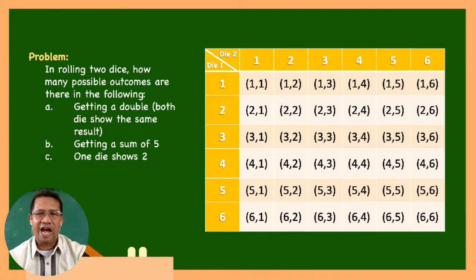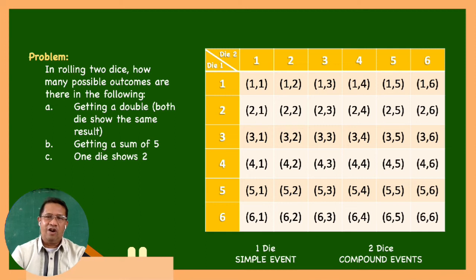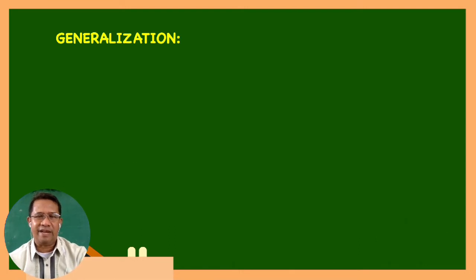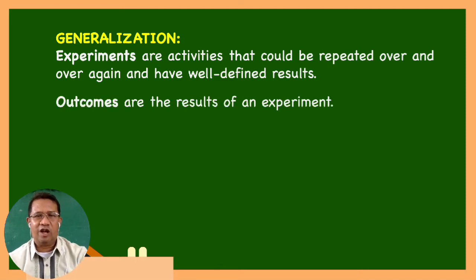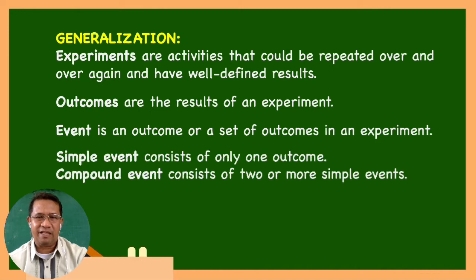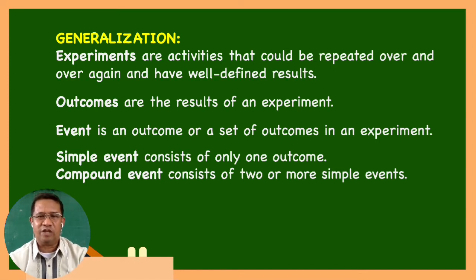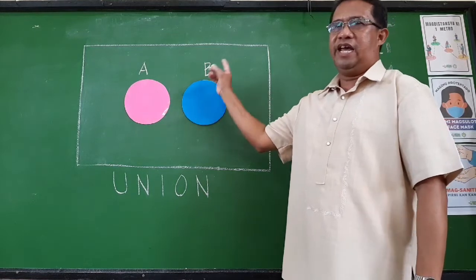In the experiment, the outcomes are listed in the table. Rolling one die is a simple event. Rolling another die is another simple event. Hence, rolling two dice is an example of a compound event. As a summary: experiments are activities that can be repeated over and over again and have well-defined results. Outcomes are the results of the experiment. An event is an outcome or a set of outcomes in an experiment. A simple event consists of only one outcome, while a compound event consists of two or more simple events.